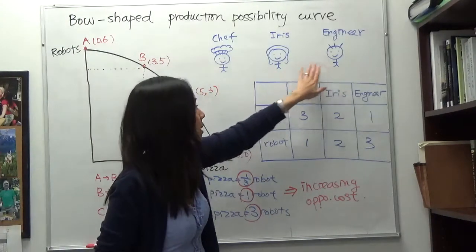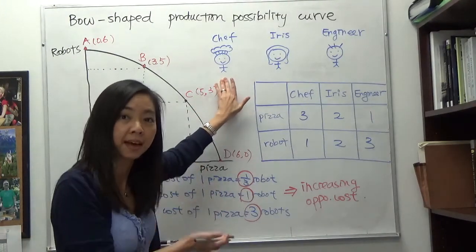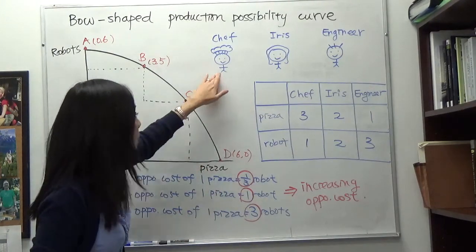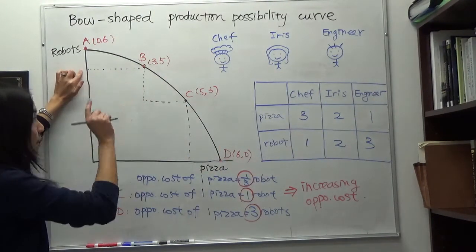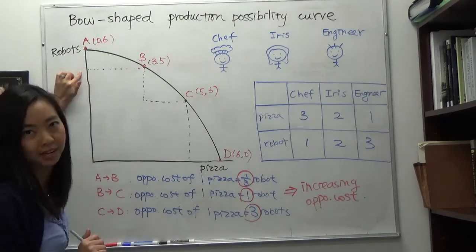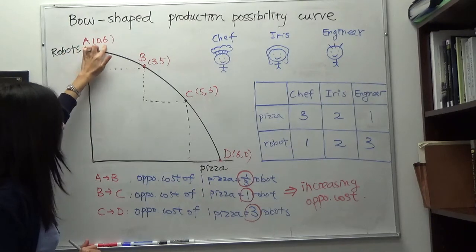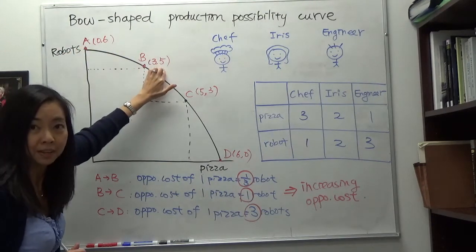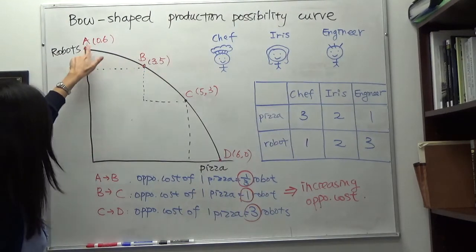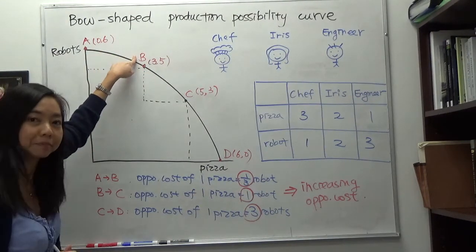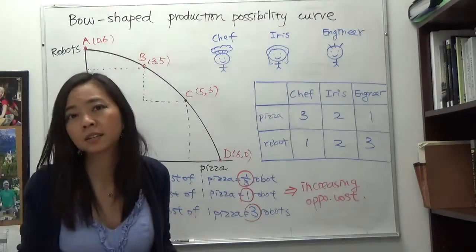We need to send someone to make pizza. We have three workers — which one do we send? Obviously we send the chef, because the chef is the best at making pizza. Because the chef is now making pizza, he's no longer making robots, so the number of robots drops from six to five. In return we get three pizzas, so we move from point A to point B.